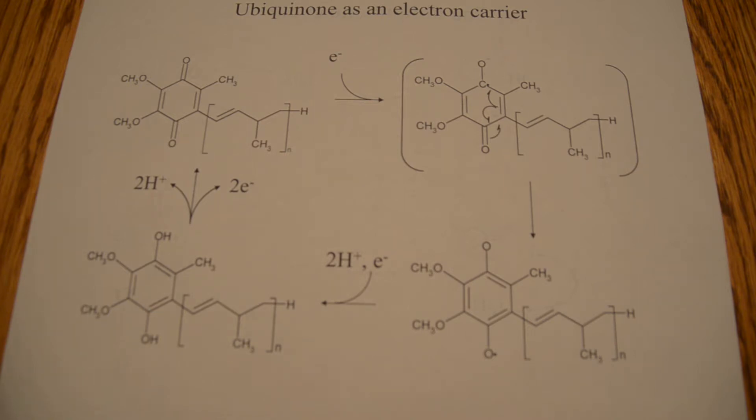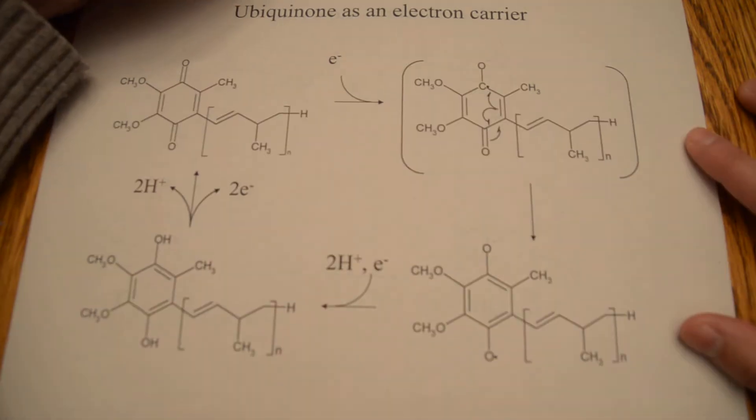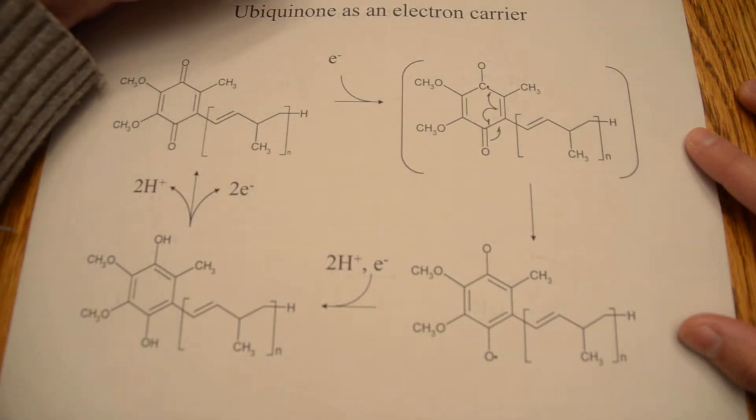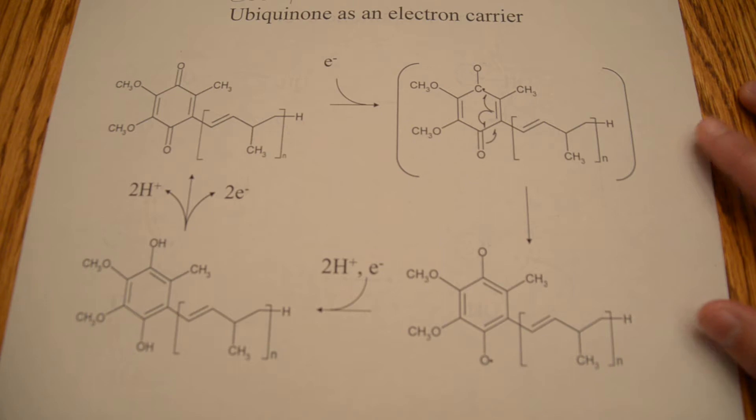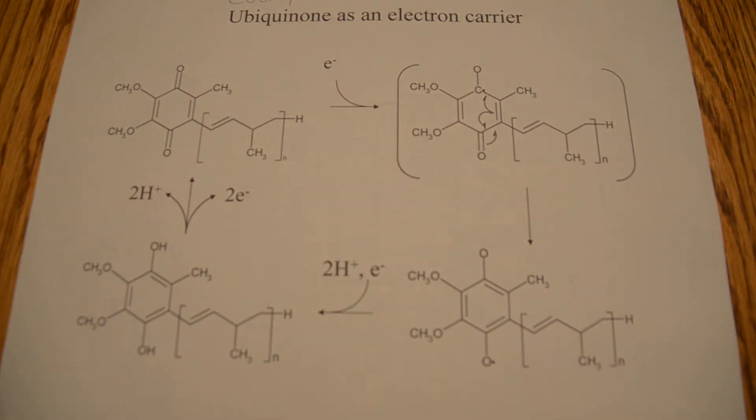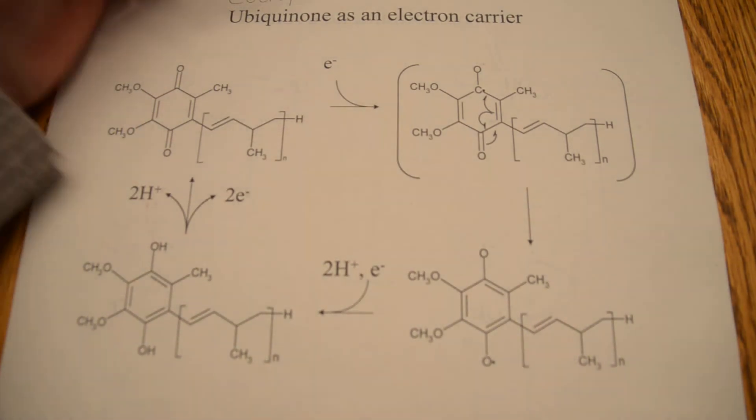Ubiquinone is an electron carrier molecule found in the electron transport chain. It's also known as coenzyme Q, which will be important later when I show you the cycle in complex 3, where we refer to it as just simply Q.